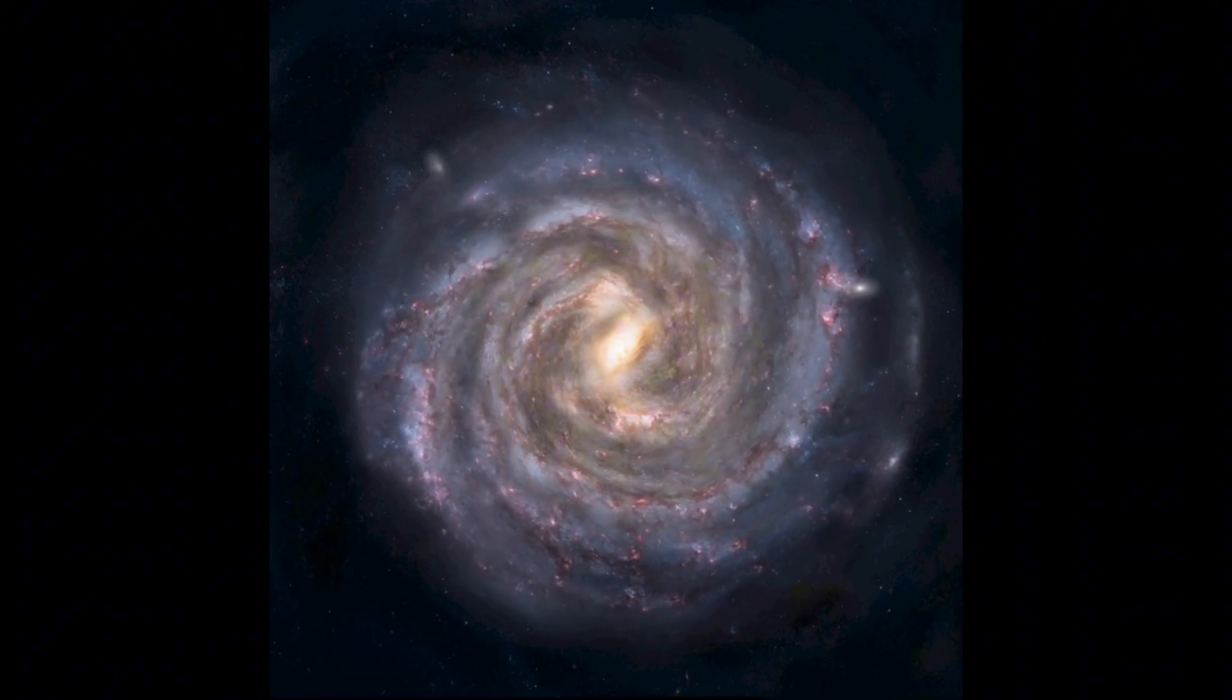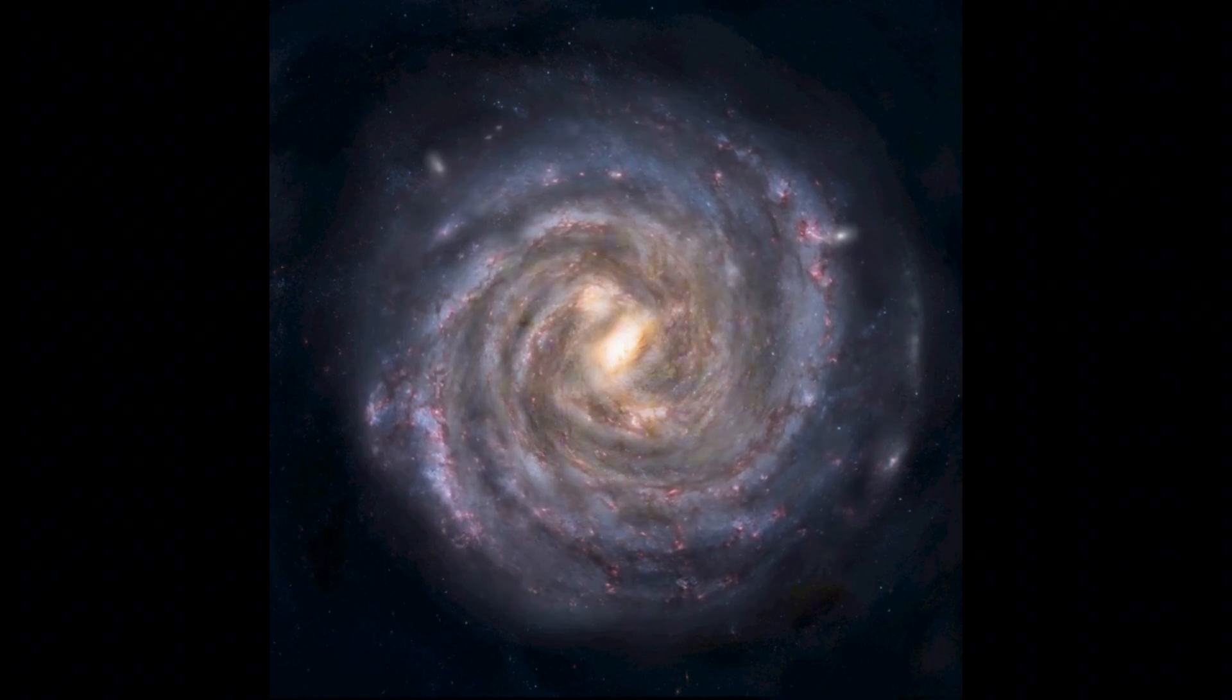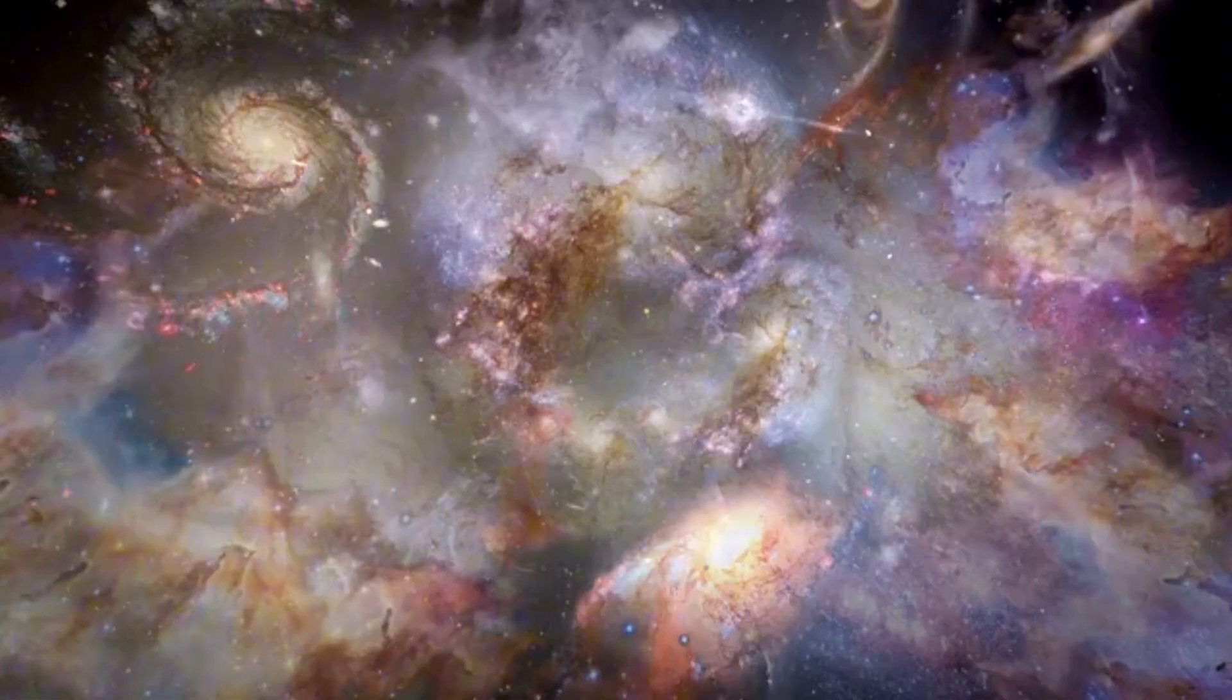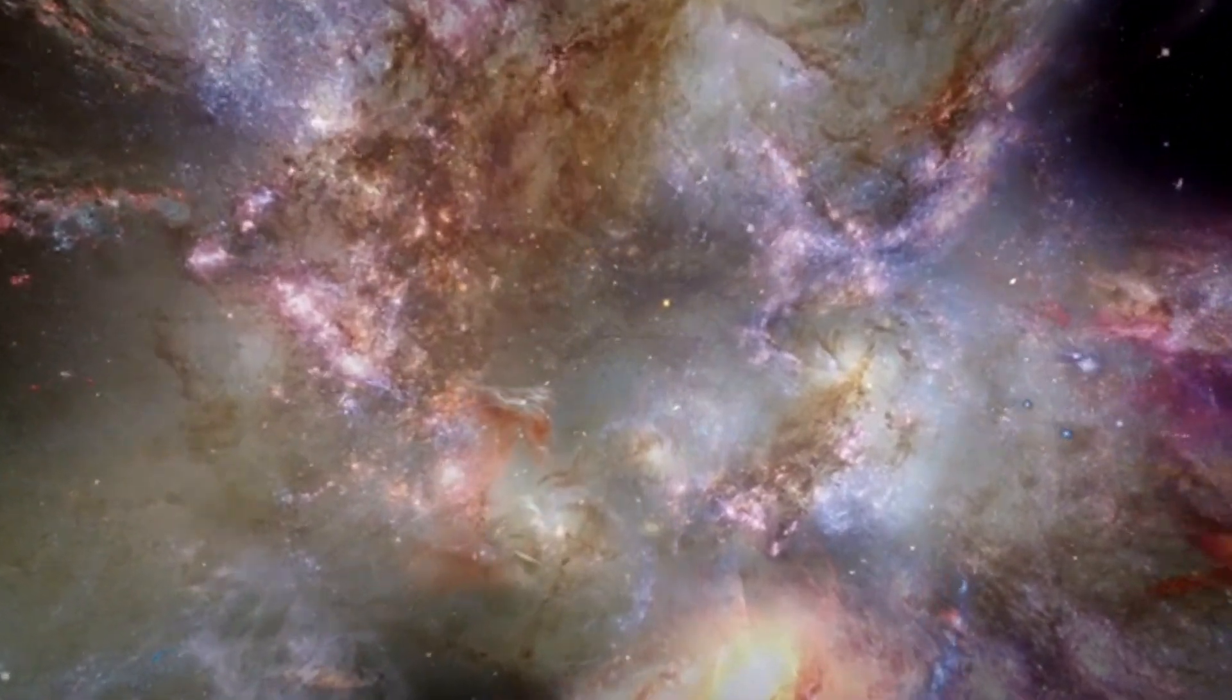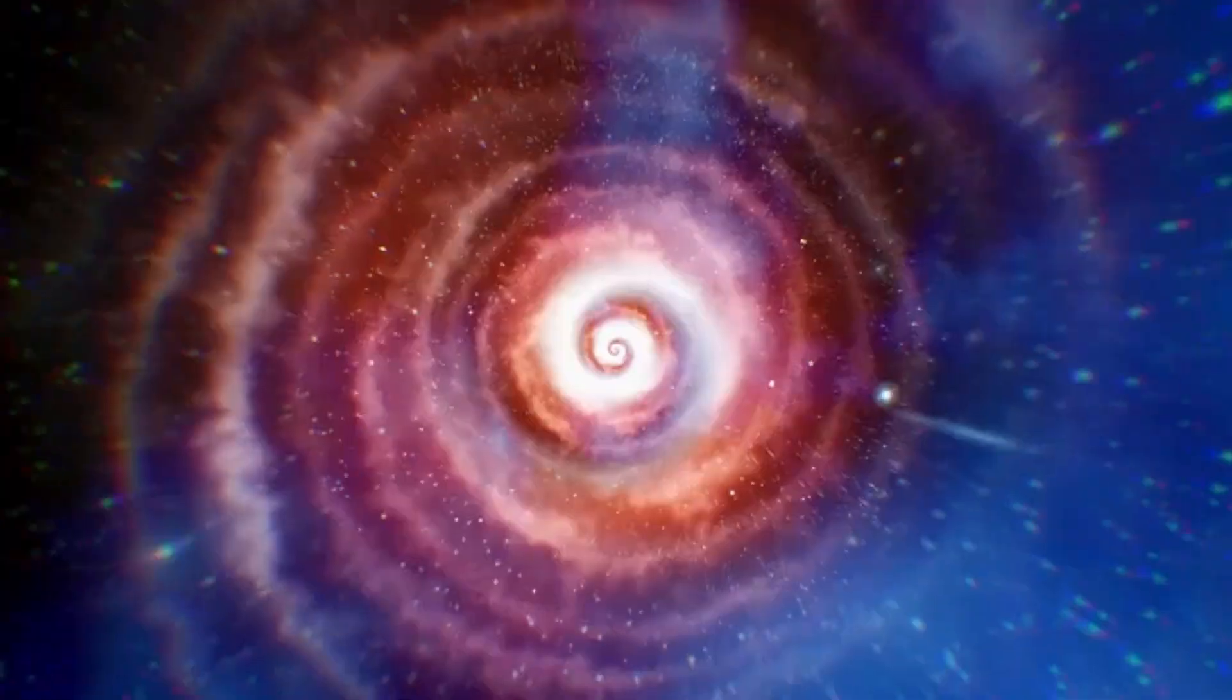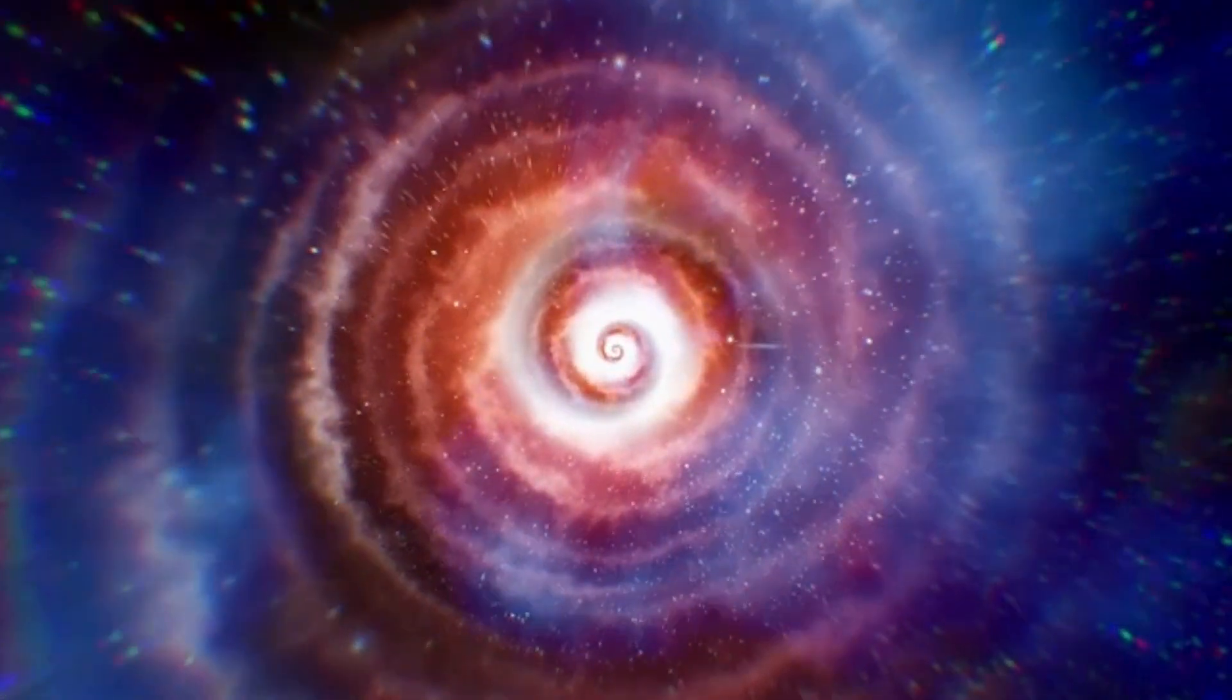The James Webb Space Telescope has found 750 new galaxies. These galaxies are different from what we expected, leading us to rethink what we thought we knew about them. This telescope was designed to help us understand how galaxies came to be, so it's not surprising that it's shaking up our understanding of the universe.